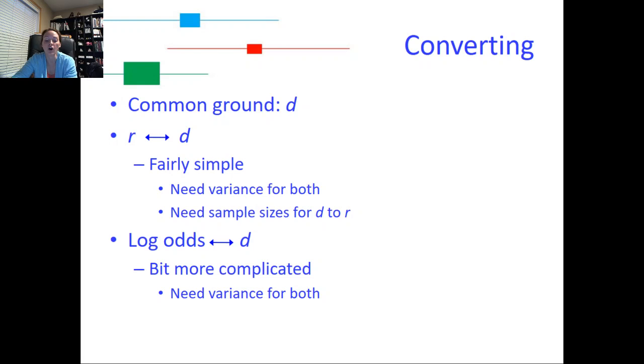For converting effect sizes, so we can convert between R and D. So if what we have is something that fell under the standardized mean difference, we can convert those effect sizes into R if the rest of our effect sizes are already in R. So we can convert from a D to an R, or we can go from an R to a D. It doesn't matter. We can actually do both. The same can happen with log odds to D, or D to log odds. So these conversions can happen in either direction. If you're moving from R to D, you actually need the R effect size, or the D effect size, and the variance for both of them. And you also need the sample sizes. And this one is a fairly simple conversion to do.